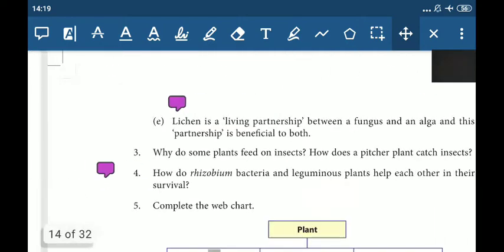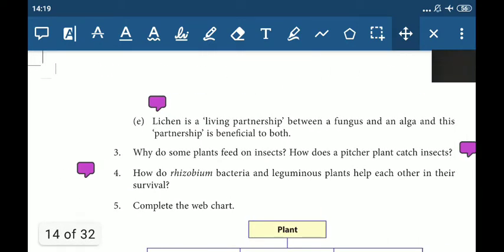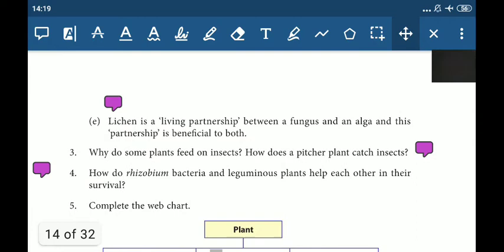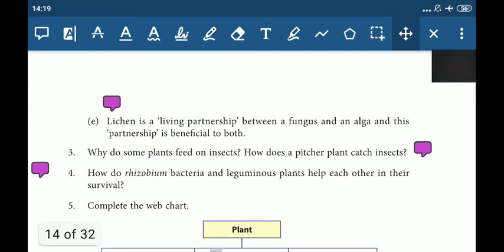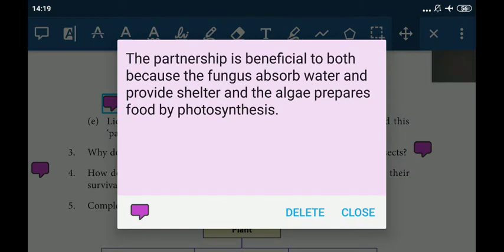Let's see the E part. Lichen is a living partnership between a fungus and alga and thus this partnership is beneficial to both. How is the partnership beneficial to both? Because the fungus absorbs water and provides shelter, and the alga prepares food by photosynthesis.